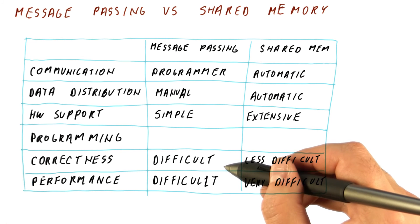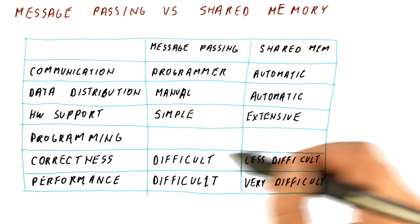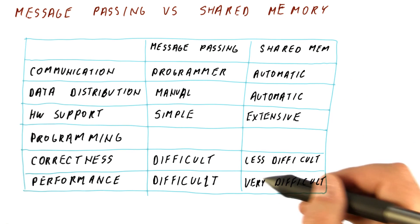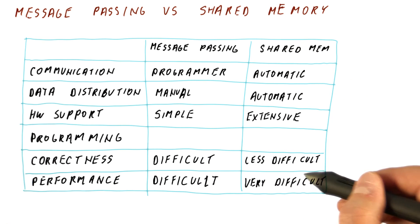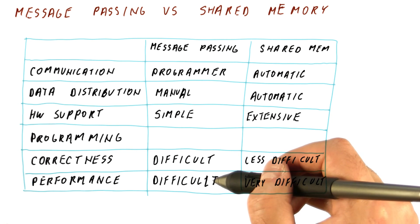So with message passing, by solving the correctness problem, you are also solving a large part of the performance problem. In shared memory, it's easier to get things right, but the effort to get it perform well might be even more than with message passing. See you soon!